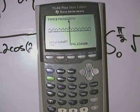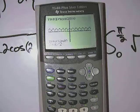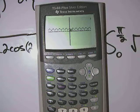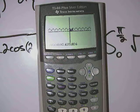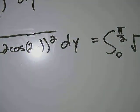My lower limit is 0, so I'm going to hit 0, enter. My upper limit is pi over 2, so I'm going to type in pi divided by 2, enter. And it looks like the answer is 2.635.